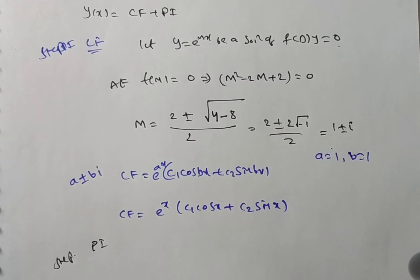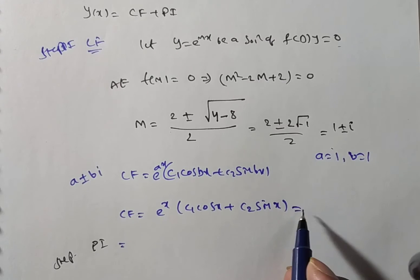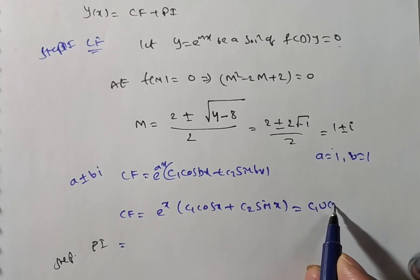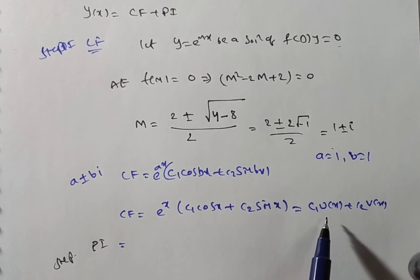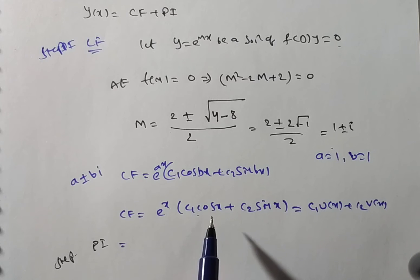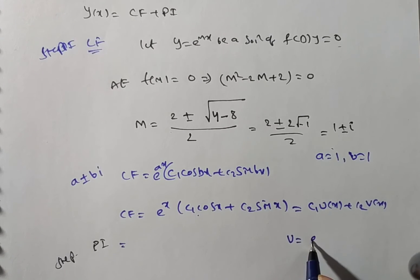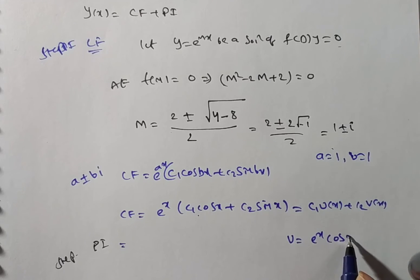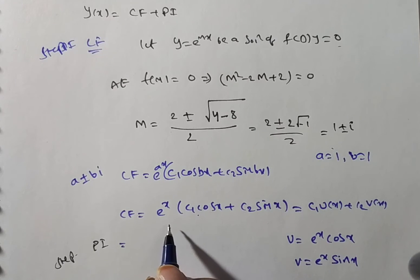Step 2: Find the particular integral. In the variation of parameters method, the particular integral depends on the complementary function. We compare the CF with c₁·u(x) + c₂·v(x). Here u(x) = e^x · cos(x) and v(x) = e^x · sin(x). Don't forget to include e^x, otherwise the answer will be wrong.